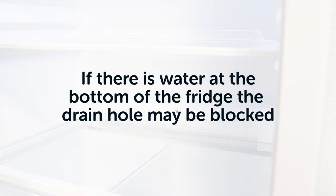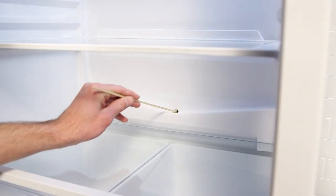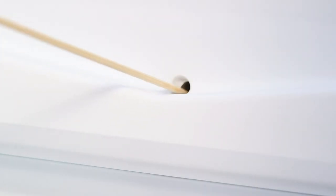If you notice water collecting in the bottom of the fridge the drain hole may be blocked. Use a skewer or something similar to unblock the drain hole so the water can drain through.